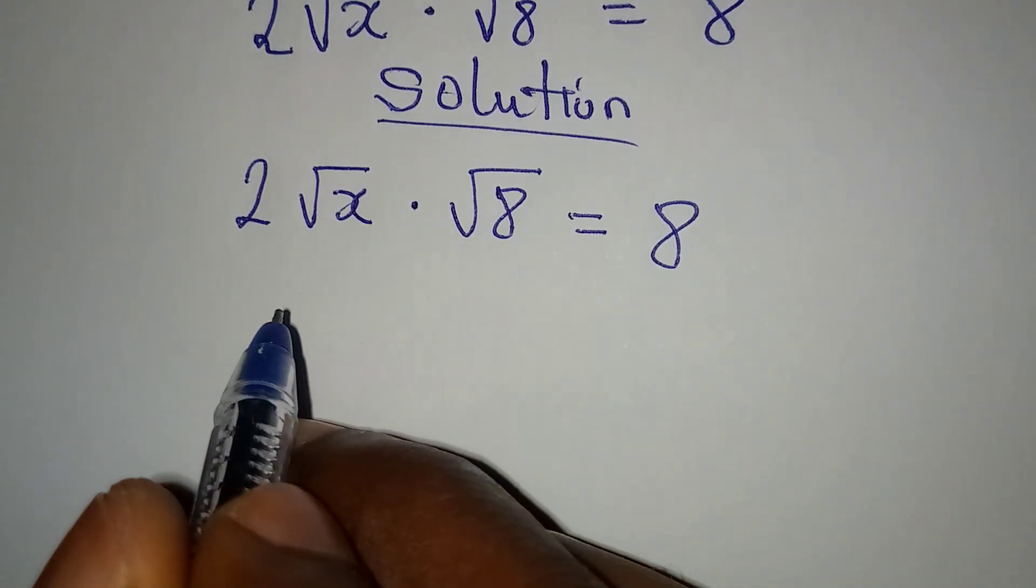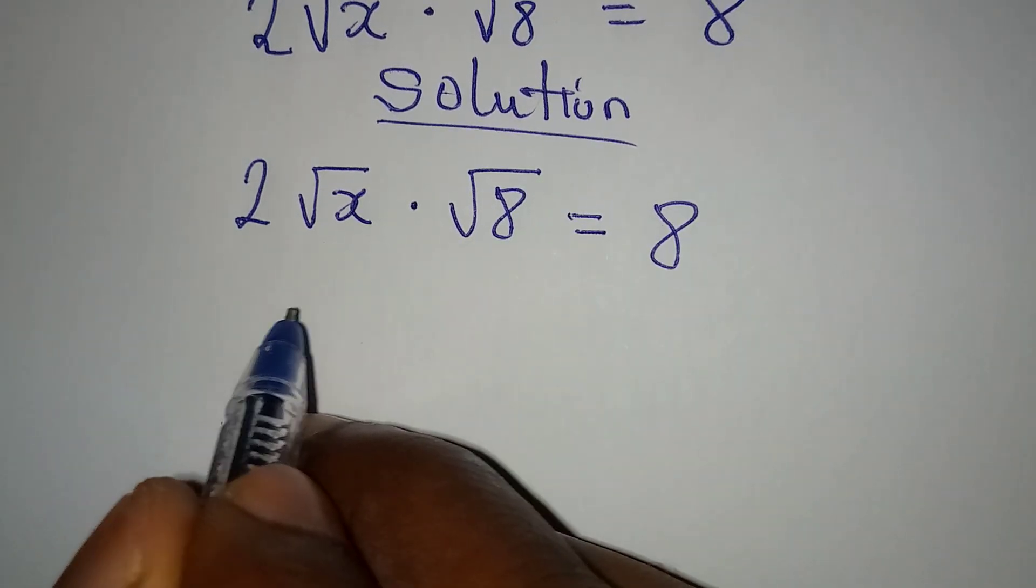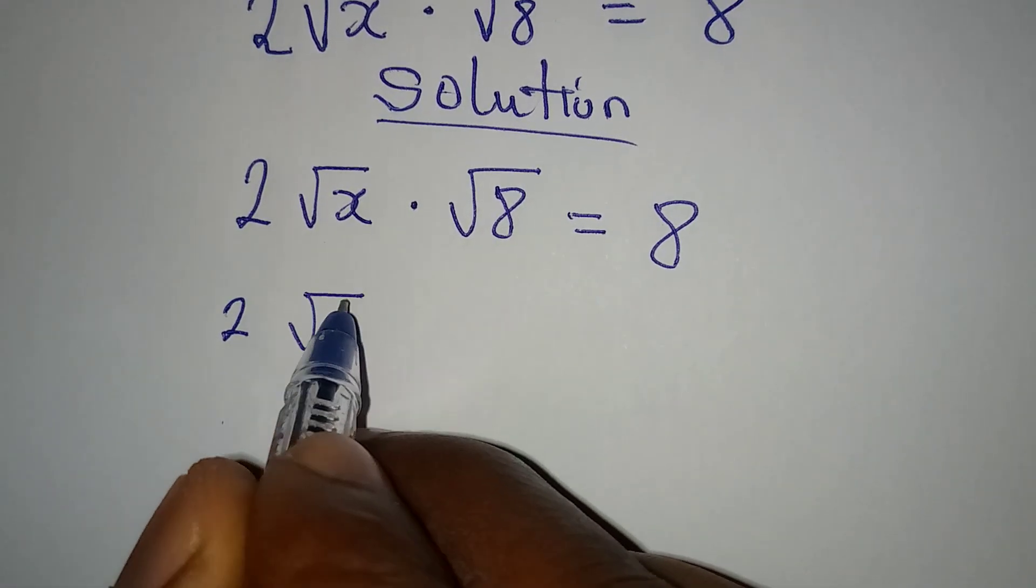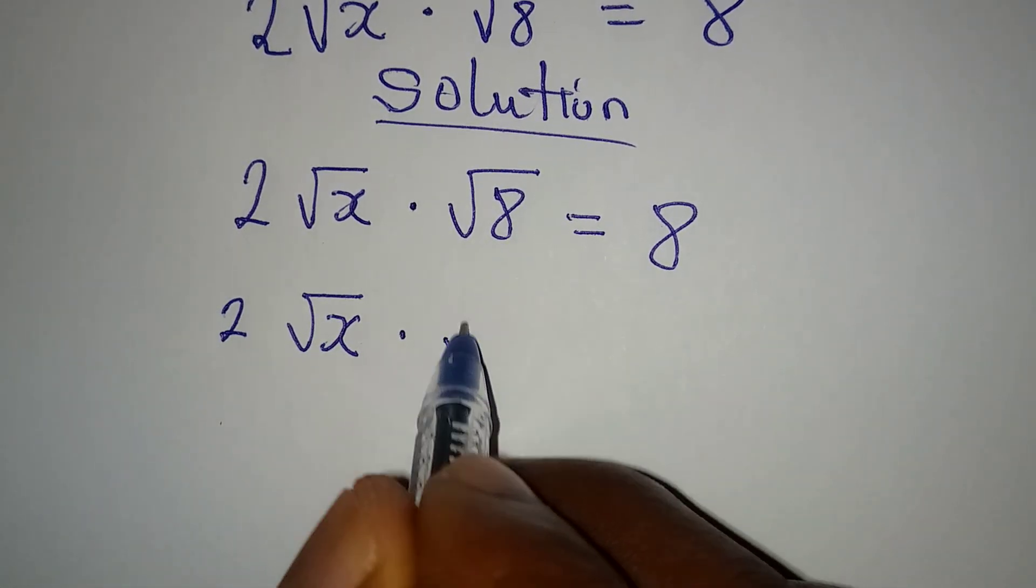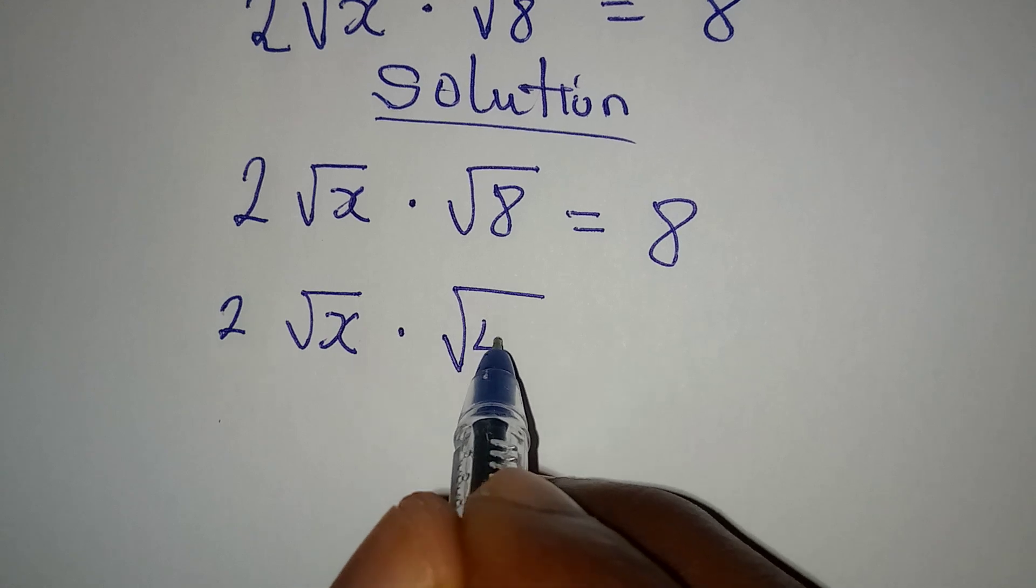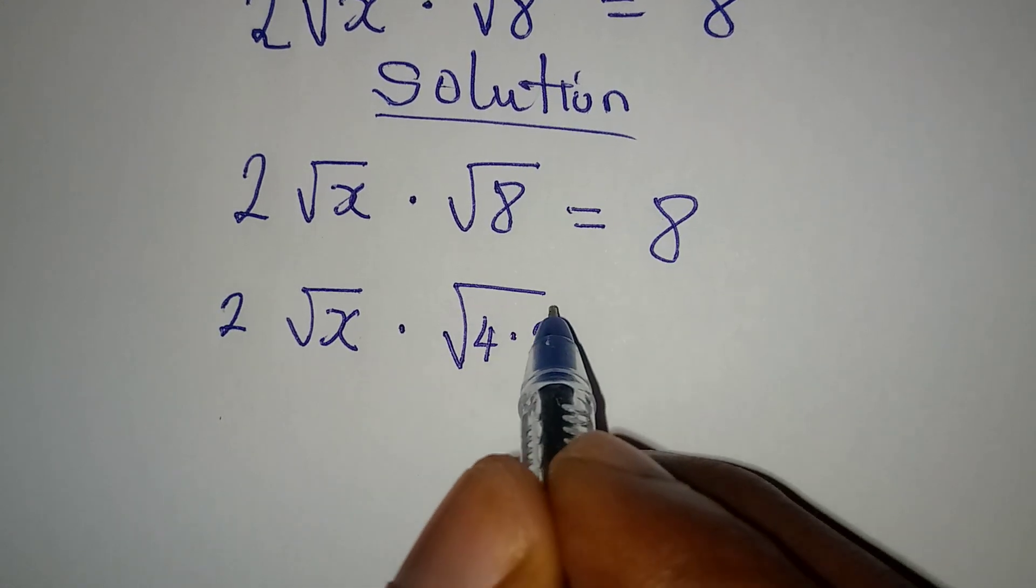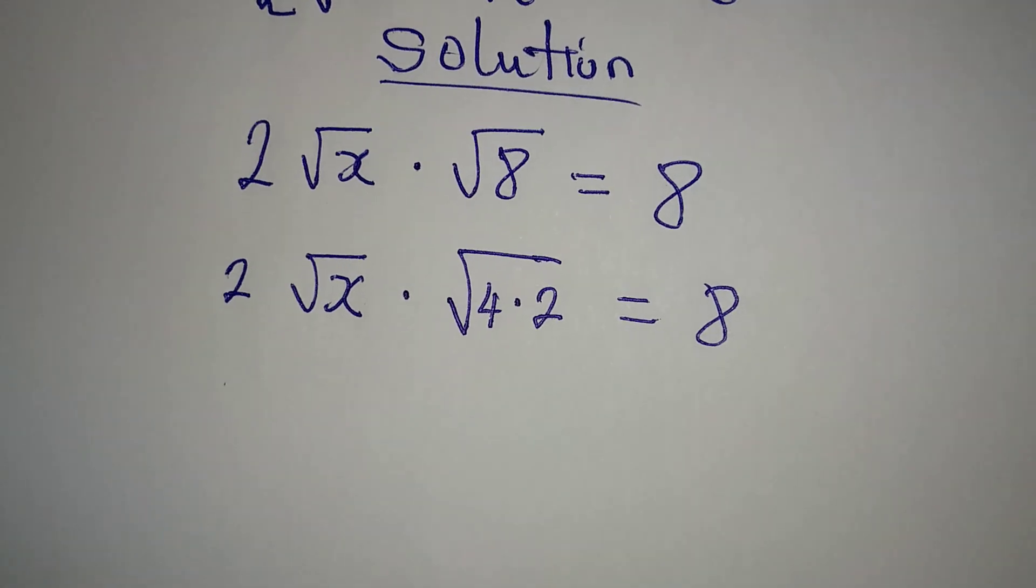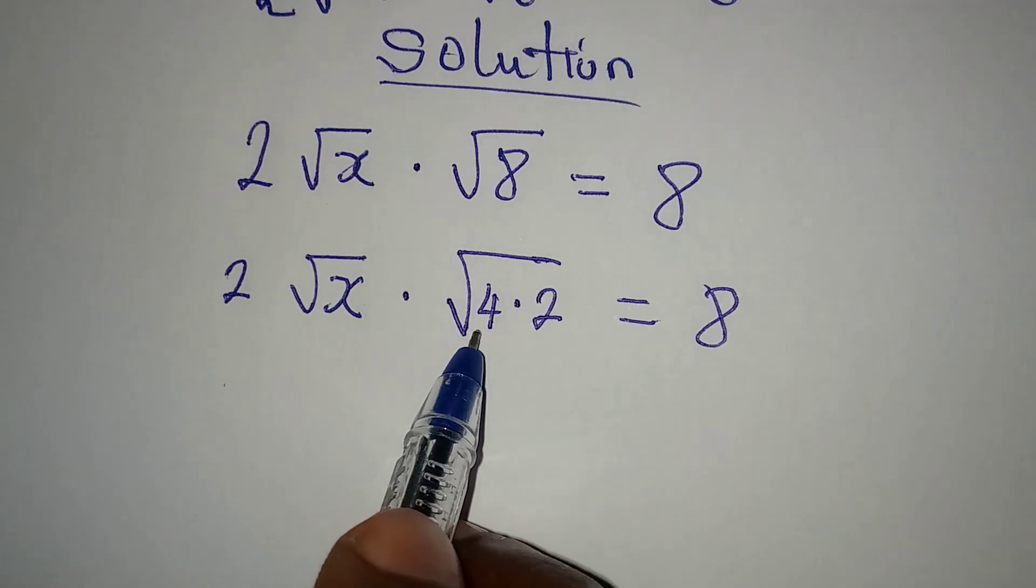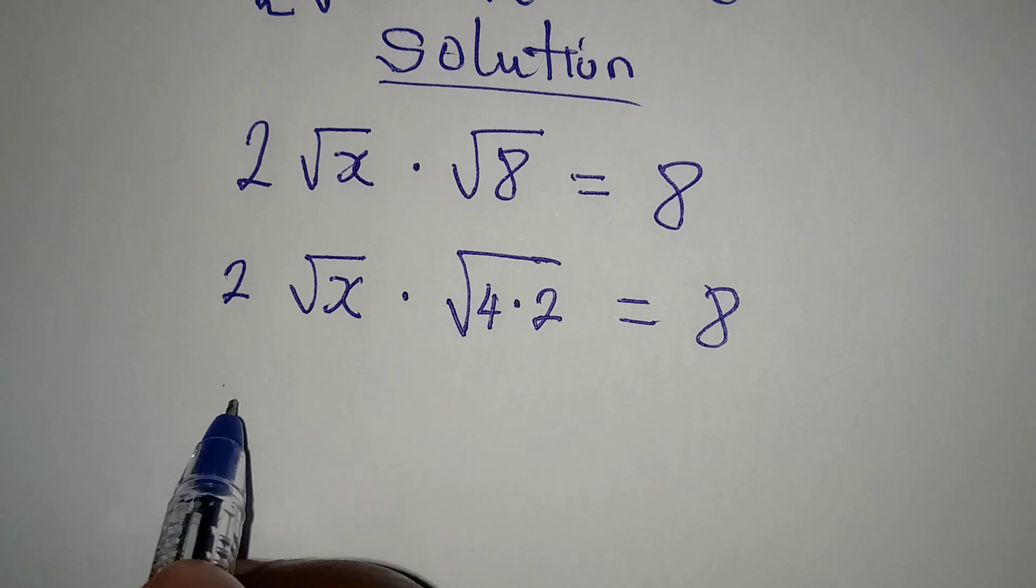I want us to break this 8 into simpler terms. 2√x multiplied by √8 - you know 8 is 4 times 2, right? And this is equal to 8. Now this 4 here is a perfect square, we can find its square root.